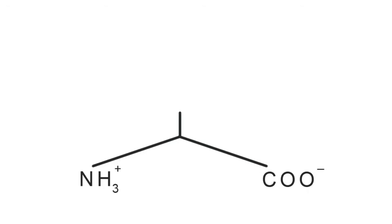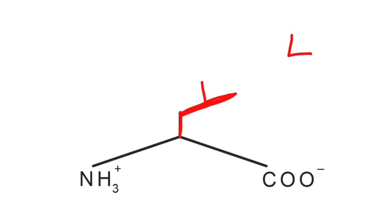Moving on to leucine, we're going to incorporate a branch and make an L for leucine, because its single-letter abbreviation is L. We make this L shape, and then we split the long branch of the L in half with another line, and that gives you leucine.